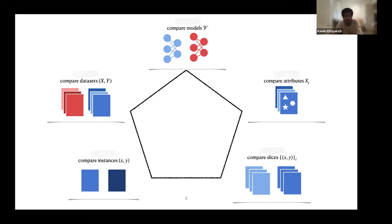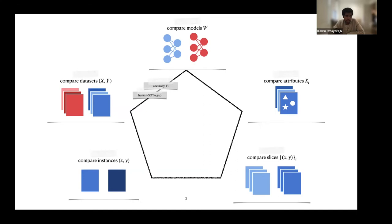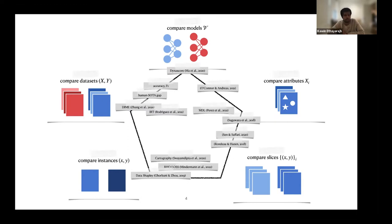For example, a metric like accuracy or F1 score only allows us to compare two models with respect to the same dataset. If we wanted to compare two different datasets with respect to the same model, what is typically done is looking at the gap between human performance and the performance of a state-of-the-art model — the bigger the gap, the harder one dataset is said to be relative to another. This line of argument is often used when proposing a new dataset, but none of these methods allow us to make all five comparisons.